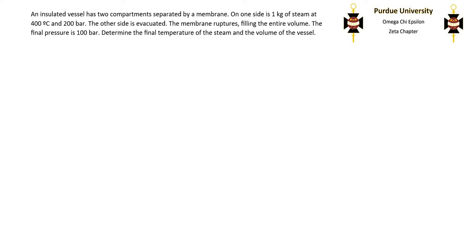In this video, I'm going to go through an example problem that applies the first law to a closed system using the steam tables. The problem statement says an insulated vessel has two compartments separated by a membrane. On one side is one kilogram of steam at 400 degrees Celsius and 200 bar. The other side is evacuated. The membrane ruptures filling the entire volume. The final pressure is 100 bar. Determine the final temperature of the steam and the volume of the vessel.